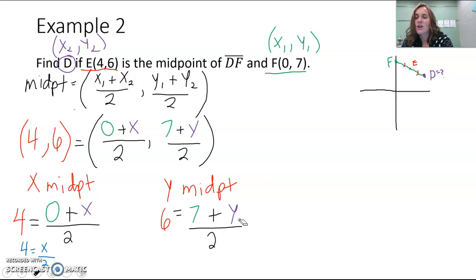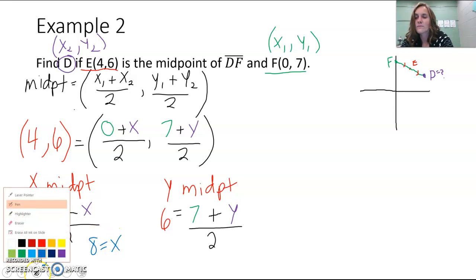If we're trying to solve for that x, we need to get rid of that 2. How do we cancel out that 2? That 2 is dividing with x, so how do you cancel out dividing? You do the opposite, and the opposite of dividing is multiplying. So we're going to multiply both sides by 2. If we multiply both sides by 2, the 2 that's dividing cancels out, and 4 times 2 is 8. So our x value is 8.